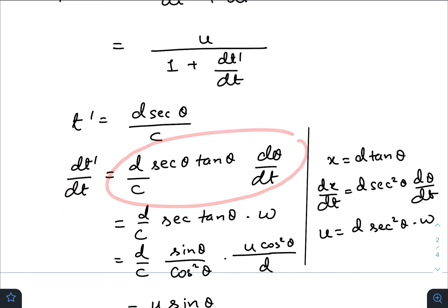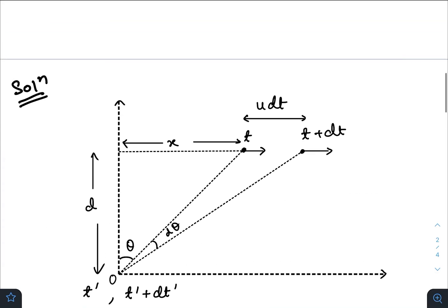So dθ/dt is the angular velocity with the time frame of the UFO. How do we calculate angular velocity? As you can see from this triangle...